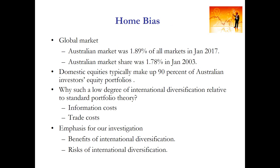The home bias problem is the issue that investors tend to significantly overweight investment in their home market securities compared with their relative investment in foreign country securities, especially in a perfectly diversified portfolio. Investors theoretically should invest in all countries around the world in proportion to the size of the market capitalization of those particular markets. However, it's not what we observe in practice.